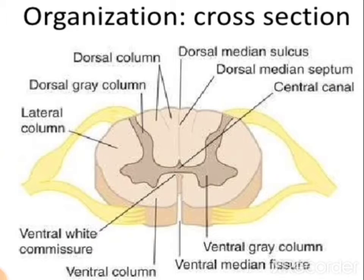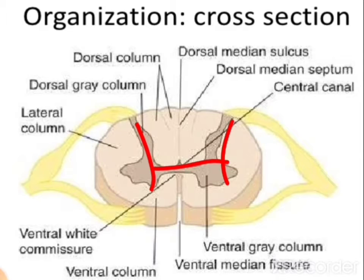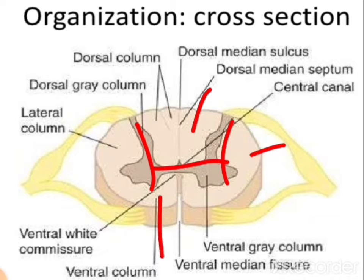In the transverse section of the spinal cord we find the capital-H shaped grey matter. This grey matter is surrounded by white matter on the outside. The white matter is organized in three columns: the anterior side is the ventral column, the posterior side is the dorsal column, and the lateral side is the lateral column.